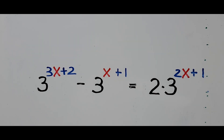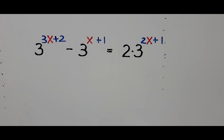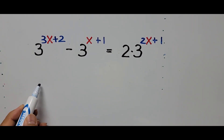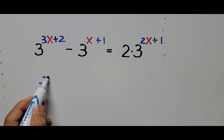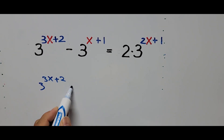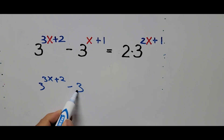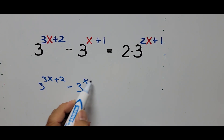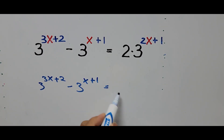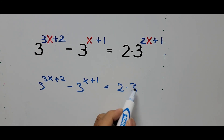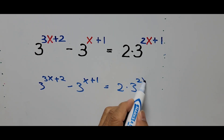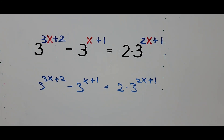Let's start solving the equation. We write it again: 3 to the power 3x plus 2, minus 3 to the power x plus 1, equals 2 times 3 to the power 2x plus 1.